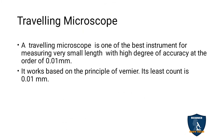Next we move on to the traveling microscope. The traveling microscope is the best instrument for measuring small lengths with a high degree of accuracy at the order of 0.01 mm. You come across 0.01 mm in the screw gauge - in a previous class you studied about the screw gauge and the vernier caliper, which are used to measure small lengths. This traveling microscope is also used to measure small lengths of objects, and it works on the vernier caliper principle. Its least count is 0.01 mm.